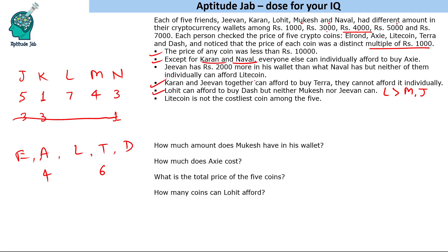Terra is 6000. Now Litecoin is not the costliest among the five coins, and since the price of any coin is less than 10,000, Litecoin cannot be 9000. G1 and Nawal cannot afford Litecoin, so Litecoin must be more than 5000. It could be 7000 or 8000, but not 9000 since that would make it the maximum.